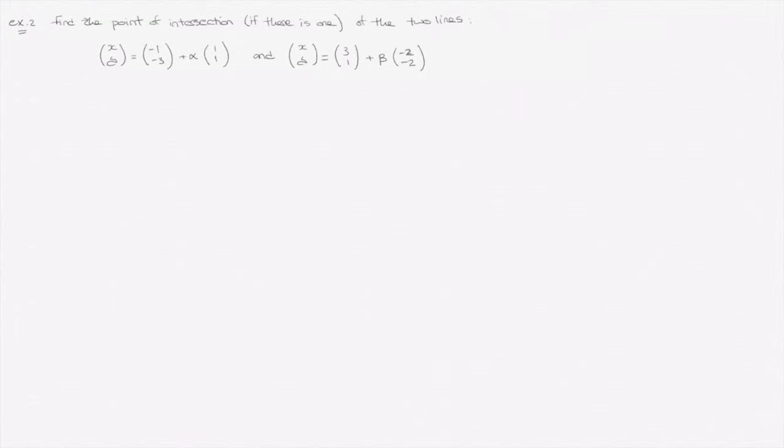Here we're asked to find the point of intersection, if there is one, of the two lines: (x,y) = (-1, -3) + α(1, 1) and (x,y) = (3, 1) + β(-2, -2).